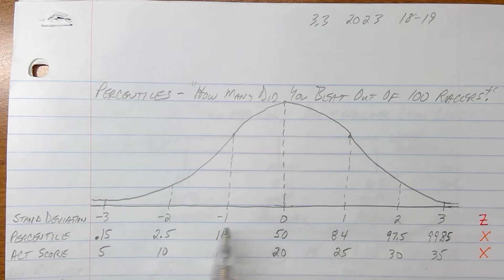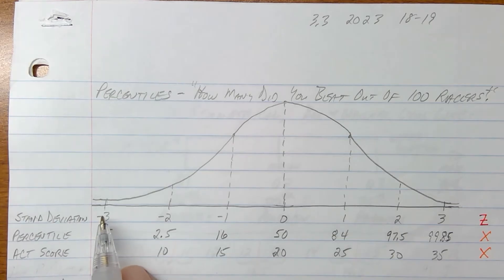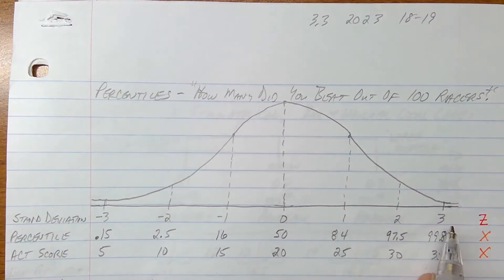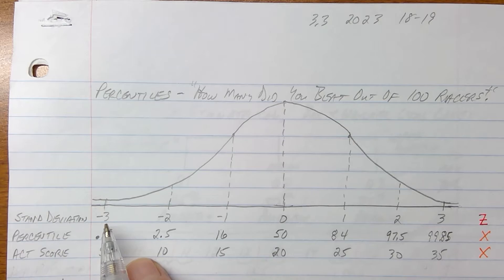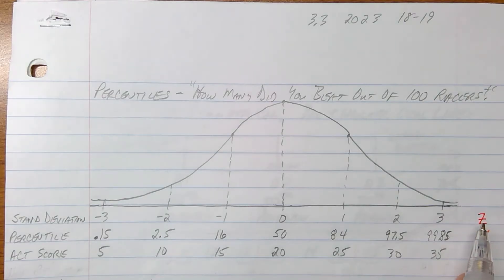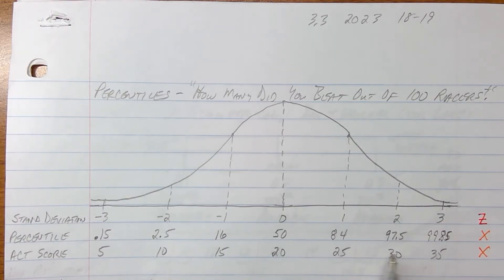I want to make a note about Z scores. When we draw the curve, we break it into three sections to the right and three sections to the left — those steps are your standard deviations. We call a standard deviation score Z. We label the middle, the mean, as zero, and then speak one, two, three standard deviations to the right and negative one, negative two, negative three to the left. So using those zero, one, two, three numbers — that's Z language. And if we're speaking with the raw data, like ACT scores of 10, 15, 20, 25, that's called X.